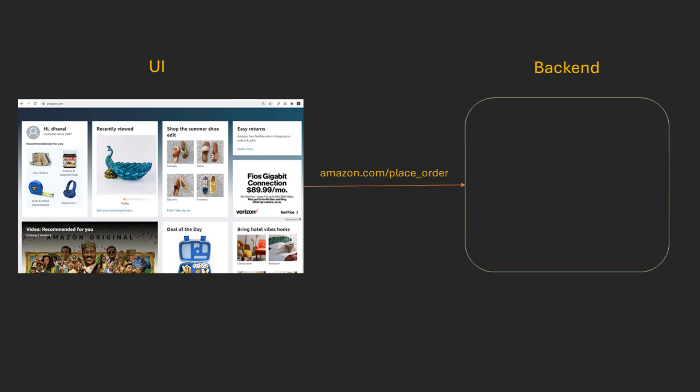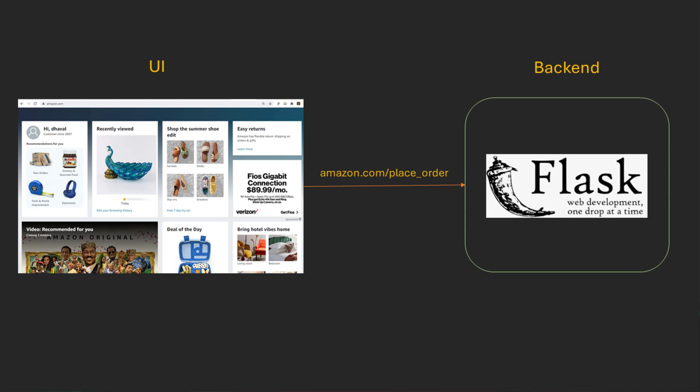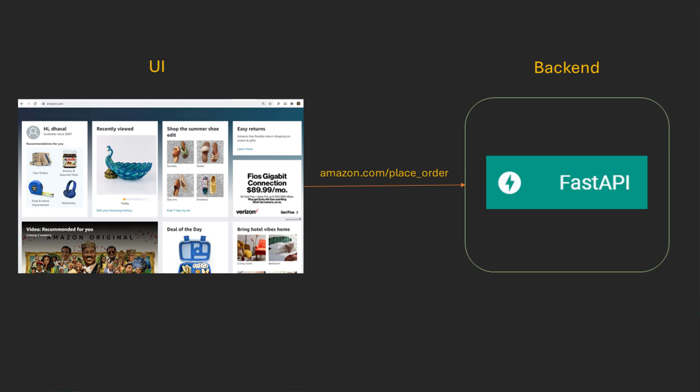Have you ever wondered when you place an order on Amazon.com what happens behind the scenes? What you see on the Amazon website is basically called the UI code. When you click the 'place order' button, it sends an HTTP request to a backend server. That web server can be written in Node.js or Python using Flask. Nowadays a new framework has come up called FastAPI, and this video is a beginner introduction to FastAPI.